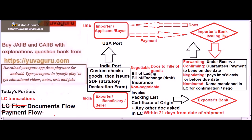The six documents are: bill of lading, bill of exchange or draft, insurance document, invoice, packing list, and certificate of origin, plus any other document asked for in the LC. All these documents along with the SDF form need to be submitted by the beneficiary to their bank within 21 days from the date of shipment — that is very important.